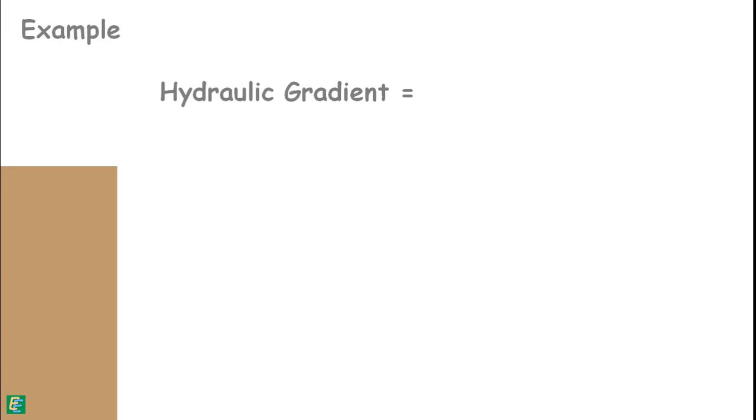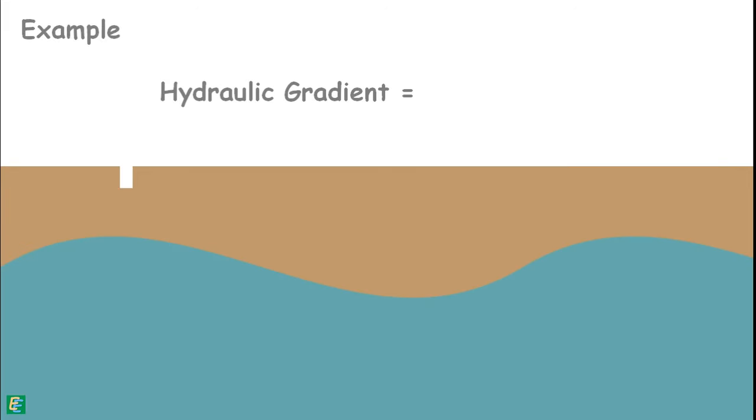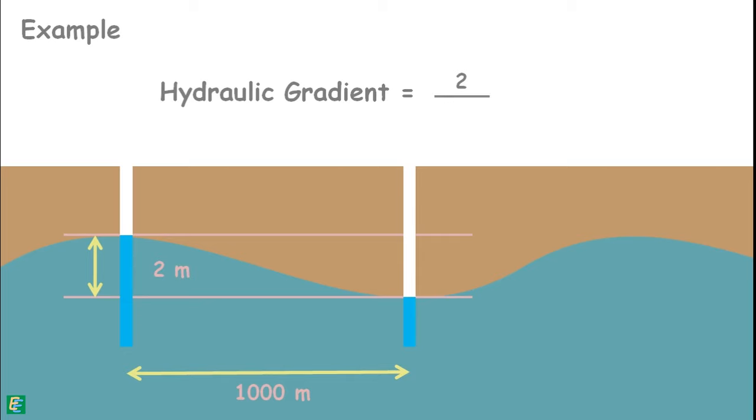For example, to measure the hydraulic gradient of ground water, we make two wells in the ground thousand meters apart and measure the difference of water level in them. If the difference of water level in these two wells is 2 meters, the hydraulic gradient is 2 by thousand or 0.002.